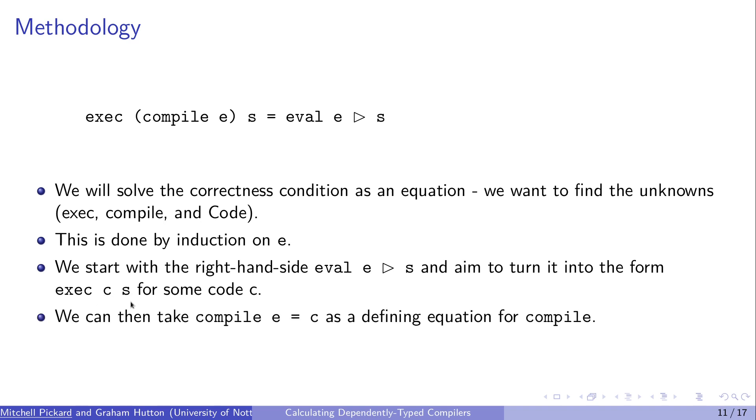When we have that code, we can then create a new defining equation for compile. So we'll say that compile E, for whatever E we're doing in this induction case, is equal to the C that we calculated from before. This new defining equation will then allow this compiler correctness condition to be true, and it will tell us what the compiler is. And the calculation that we do to get to this point will be the proof of our compiler correctness.